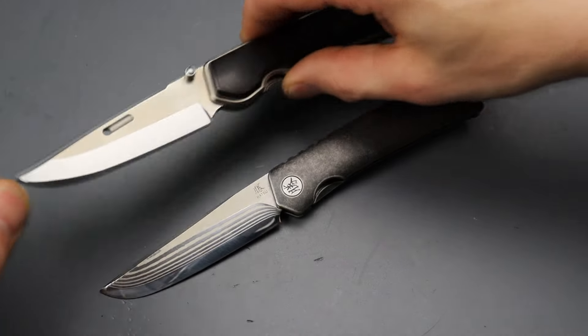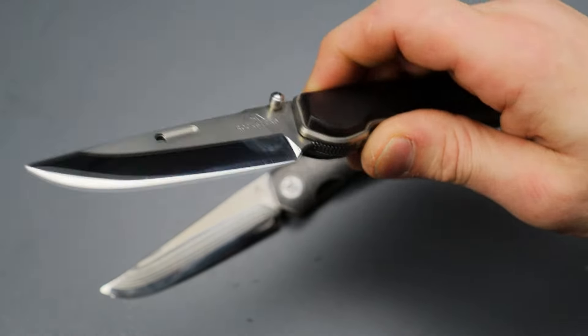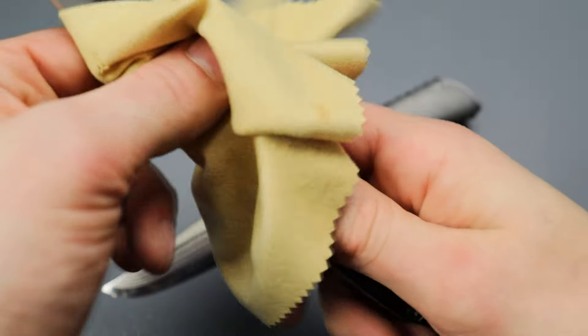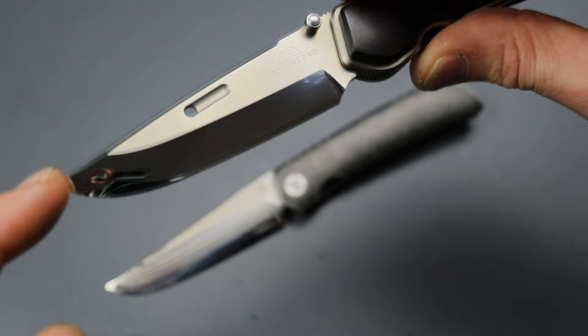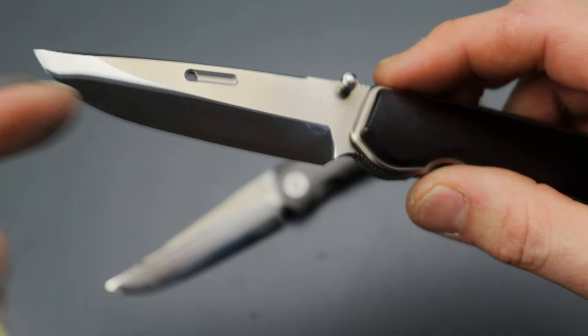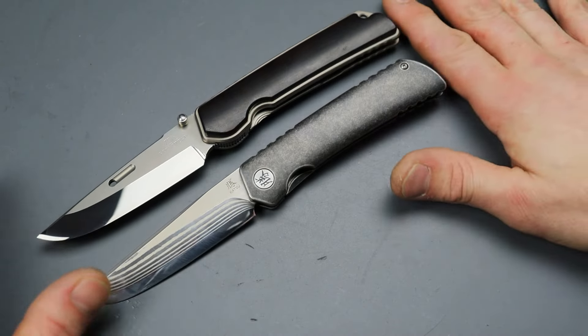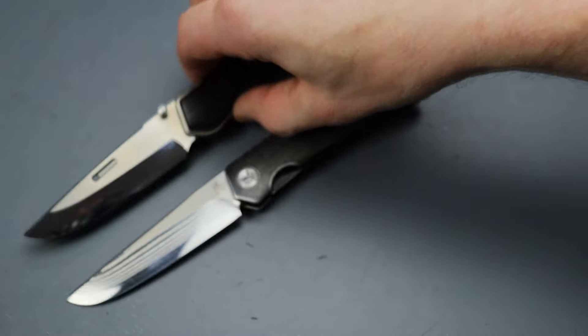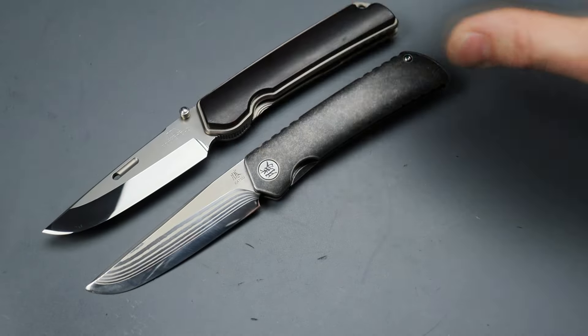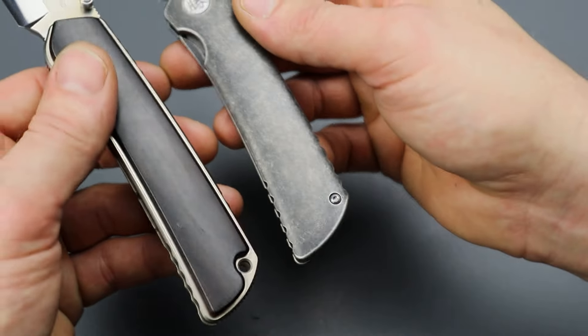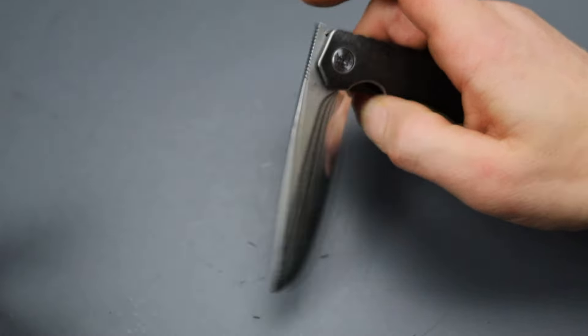For an example, this is about $1,100 right here. This is the Rockstead Higo. This is ZDP 189 heat treated to 67 HRC with a convex grind with a zero grind, so this one does not have a micro bevel. This one's actually made in Japan, that's why it is so expensive. You can see the design influence, how similar they are.